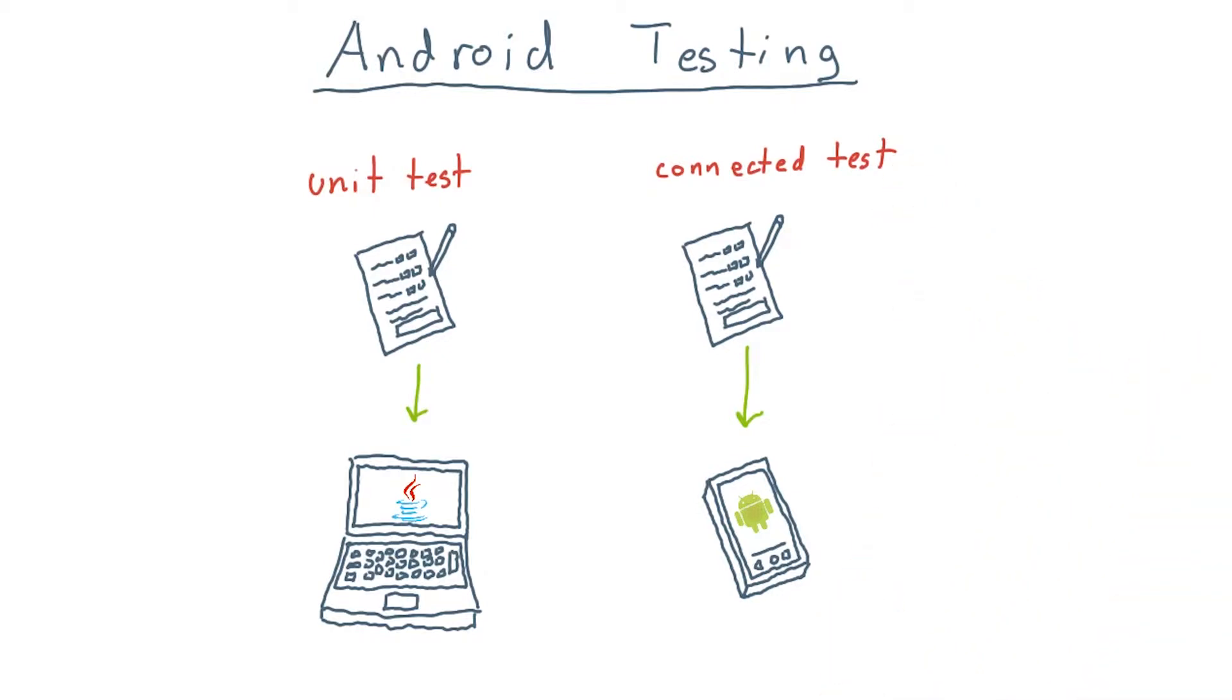Additionally, you can configure the testing options in your Gradle build script to instruct the mock Android implementation to return default values rather than throw an error. In any case, it's up to you as a developer to decide how to best write your tests and how to structure your code in such a way as to make testing easier.